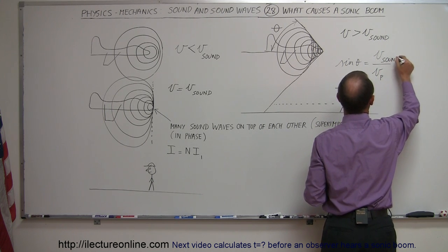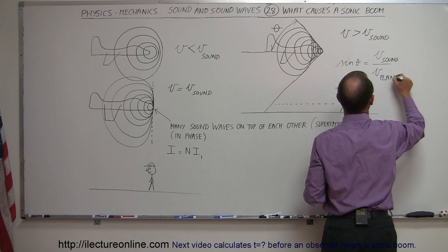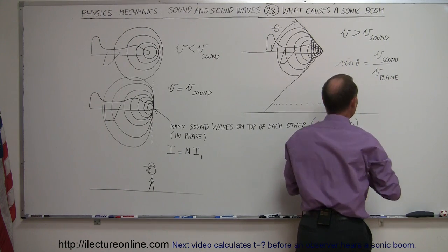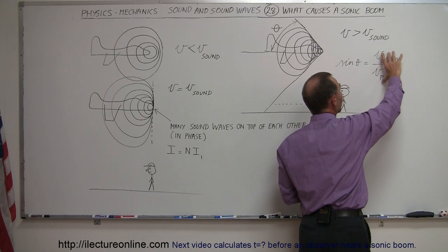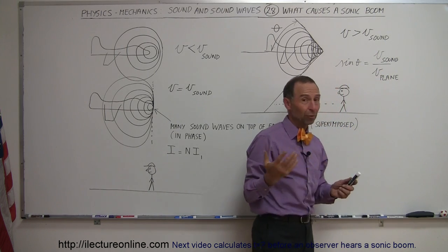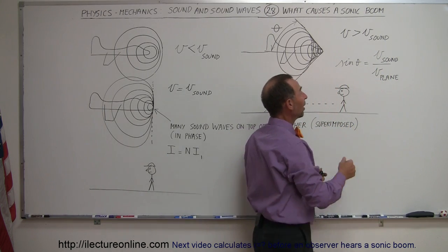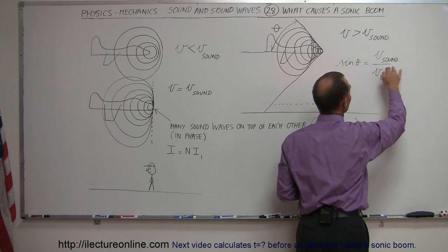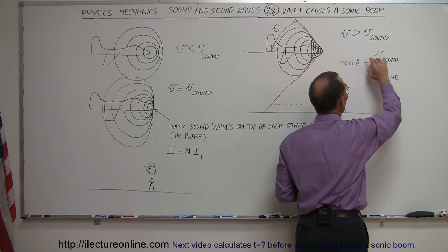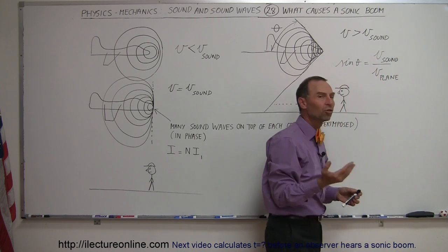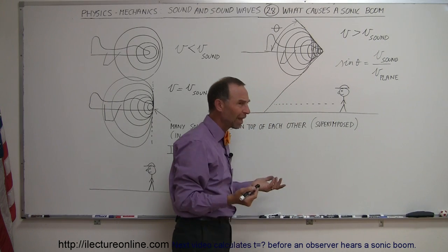So let me just write it like this, v sound and v plane like that, so it makes it clear. Notice that if they're equal to each other, that's equal to one, the sine of theta equal one means theta needs to be, of course, 90 degrees. But if the velocity of the sound is less than the velocity of the plane, then this fraction will be less than one, and then the angle theta will become smaller.